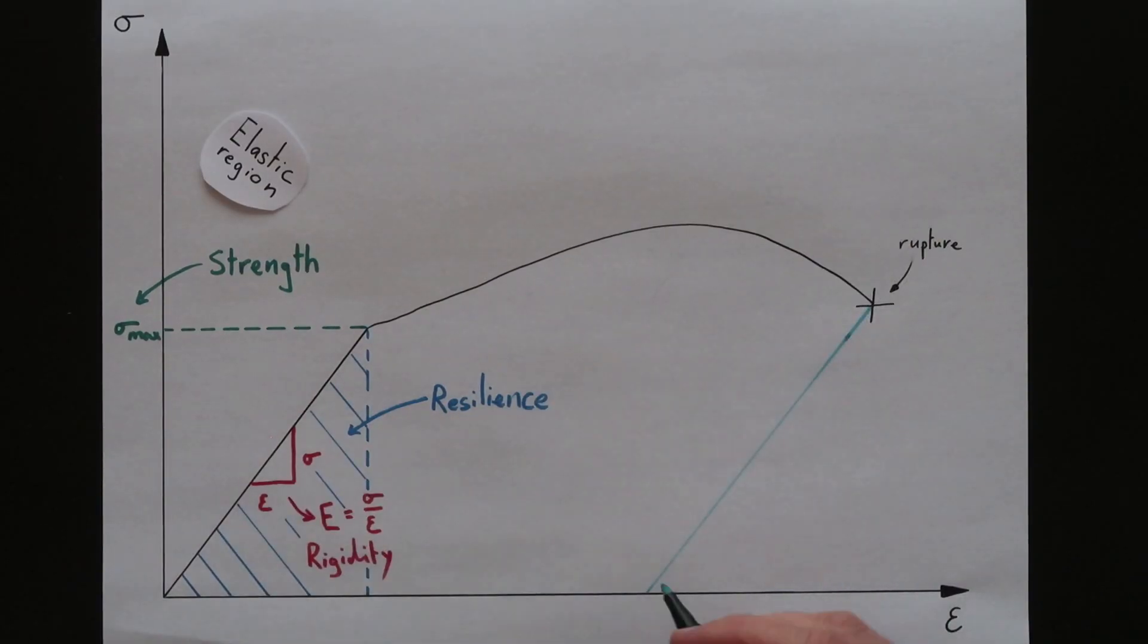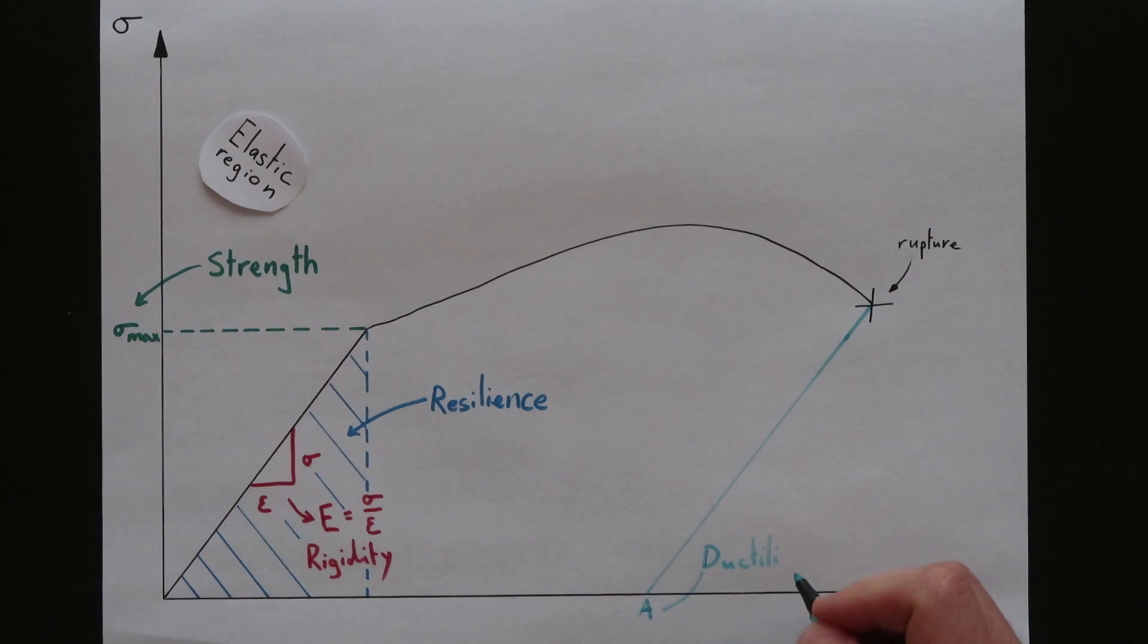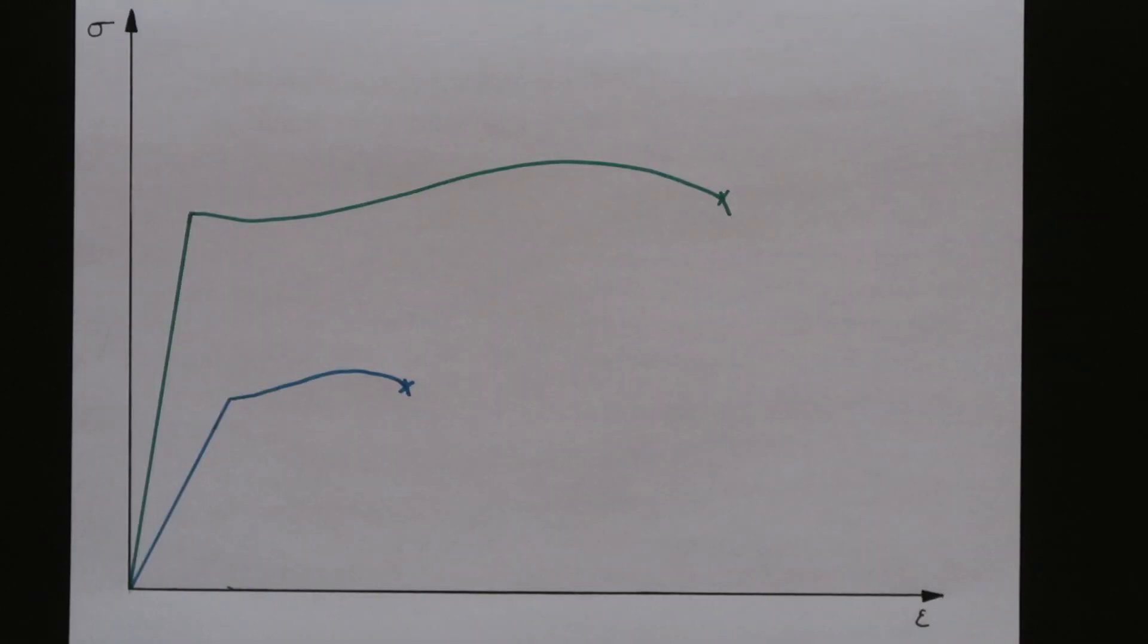Now let's get back to the whole graph and talk about the notion of ductility. Ductility in material science is defined as the degree of elongation at complete rupture. So between these two materials represented by the green and blue curve which one is more ductile? Or if I tell you that brittleness is the exact opposite of ductility which one is less brittle?